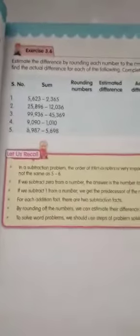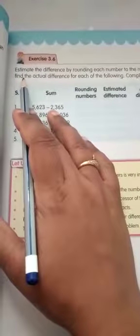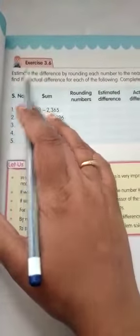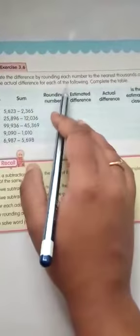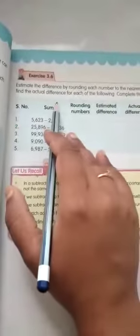Similarly, you have to do D. Let us go to the next exercise, that is 3.6. Page number is 49 in the old as well as in the new textbook. The question: there is only one bit here. Estimate the difference by rounding each number to the nearest thousands and find the actual difference for each of the following. Complete the table.